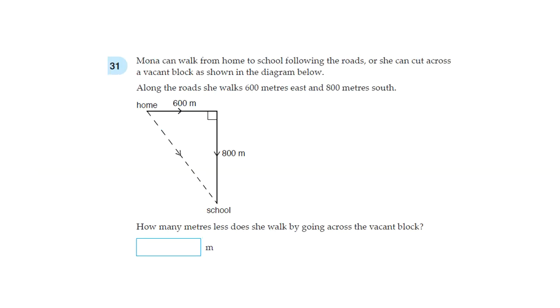Next one. Maya can walk from home to school following the roads or she can cut across a vacant block as shown in the diagram below. Along the roads she walks 600 metres east and 800 metres south. How many metres less does she walk by going across the vacant block? So this relates to Pythagoras theorem. So A, B, C. Right angle triangle. This is called the hypotenuse. And the formula is A squared plus B squared equals C squared. So in this case A is 600, B is 800. And we don't know what C is. That's what we're trying to figure out.